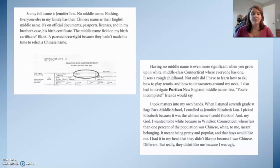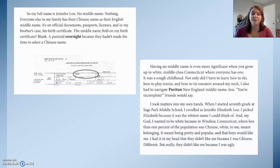Having no middle name is even more significant when you grow up in white middle-class Connecticut where everyone has one. Not only did I have to learn how to ski, play tennis, and tie sweaters around my neck, I also had to navigate being middle-nameless in Puritan New England. 'You're incomplete,' friends would say. I took matters into my own hands. When I started 7th grade at Sage Park Middle School, I enrolled as Jennifer Elizabeth Liu. I picked Elizabeth because it was the whitest name I could think of — I wanted to be white because in Windsor, Connecticut, where less than 1% of the population was Chinese, white meant belonging.